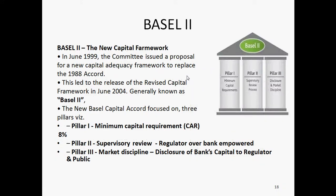Basel II was released in 1999, considering the pitfalls or drawbacks of Basel I. Basel II has three pillars. The first pillar is minimum capital requirement, which was the same as in Basel I — the capital adequacy ratio has to be a minimum 8%. The only difference is that this time they have considered market risk and operational risk along with credit risk in Basel II risk-weighted assets calculation.